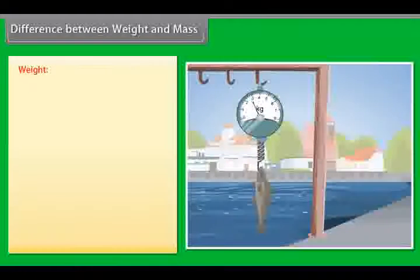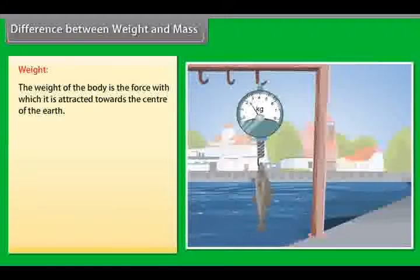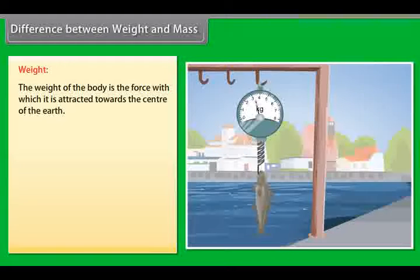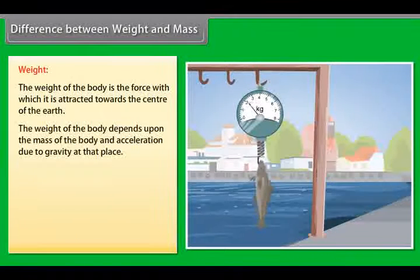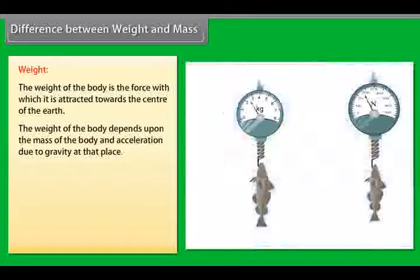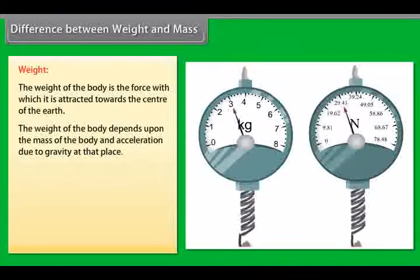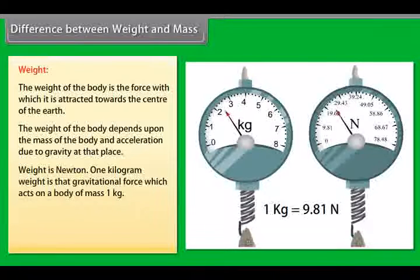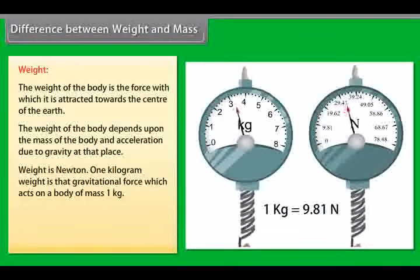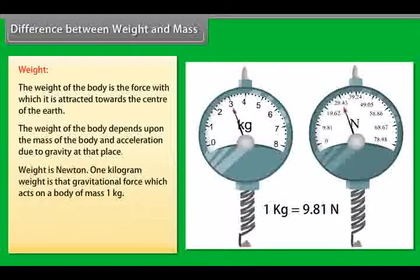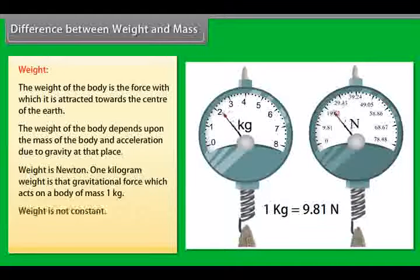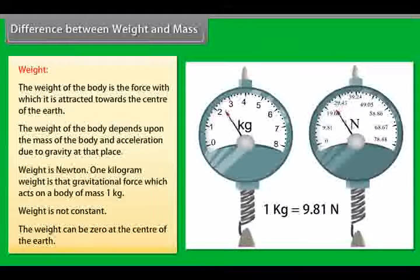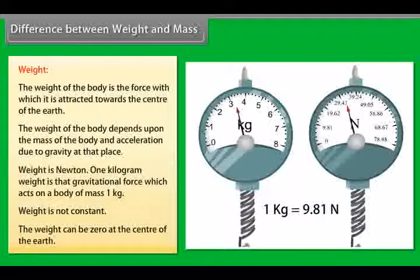Weight: the weight of the body is the force with which it is attracted towards the center of the earth. The weight of the body depends upon the mass of the body and acceleration due to gravity at that place. Weight is measured in Newtons; 1 kg weight is the gravitational force which acts on a body of mass 1 kg. Weight is not constant and can be zero at the center of the earth.